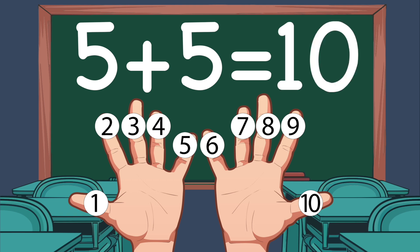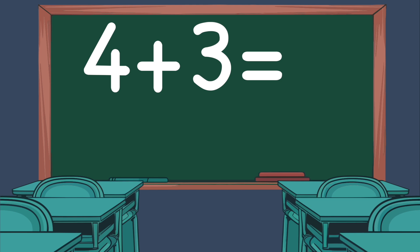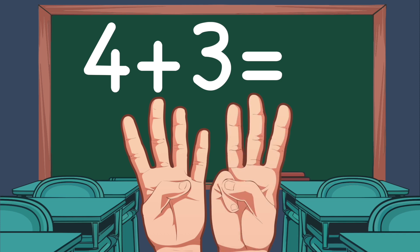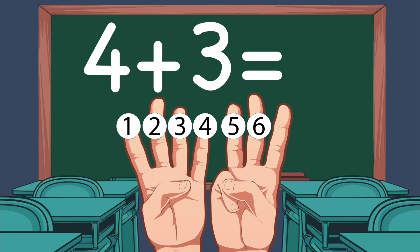Let's do another one: 4 plus 3. On our left hand, we show 4 fingers. On our right hand, we show 3 fingers. Now let's count: 1, 2, 3, 4, 5, 6, 7. So 4 plus 3 equals 7.